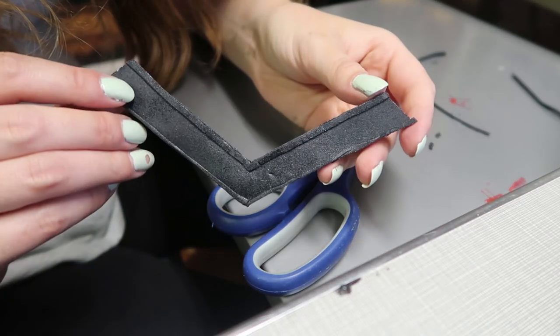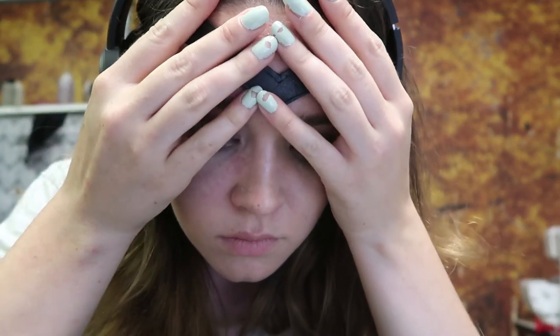Once the crown had a nice raised edge, I heated it up again and pressed it against my forehead. I kept it on until the Worbla had completely cooled, and it will hold its shape forever!